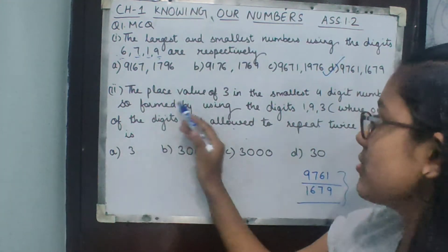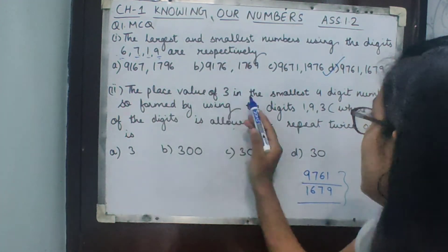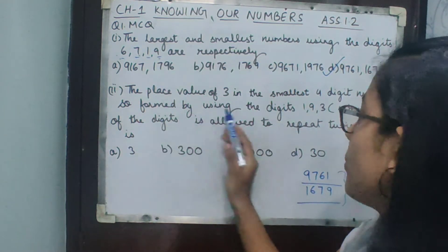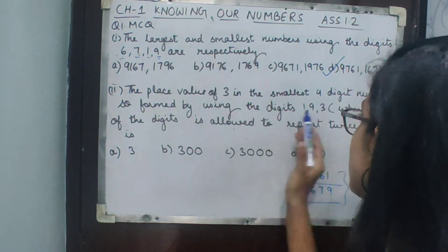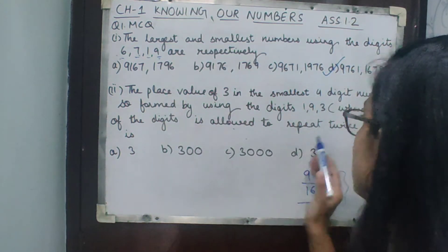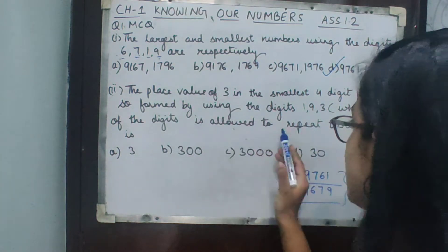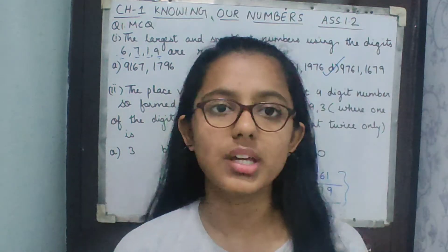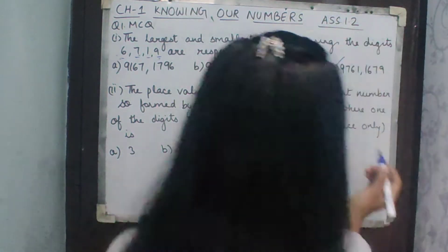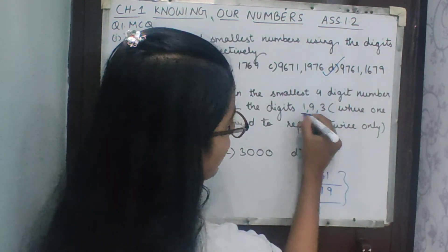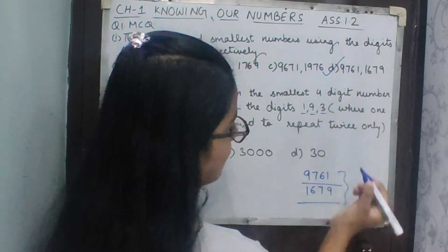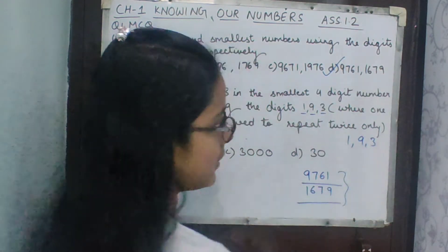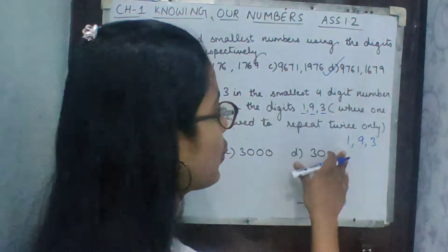Now let's move on to the second part: the place value of 3 in the smallest four-digit number formed using the digits 1, 9, and 3, where one of the digits is allowed to repeat twice.